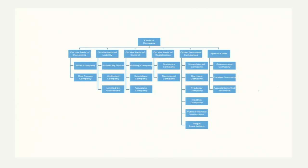Various types of companies are defined here on the basis of ownership, on the basis of registration, on the basis of membership, on the basis of structure, and on the basis of issue of the certificate of incorporation. Basically, two types of companies are considered here from the layman's point of view: one is private company, another is public company.